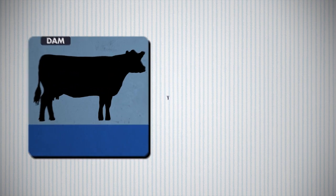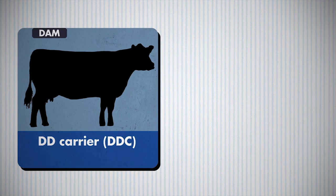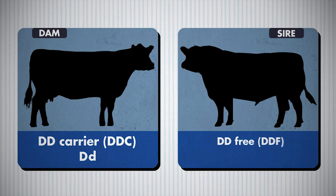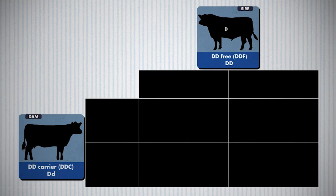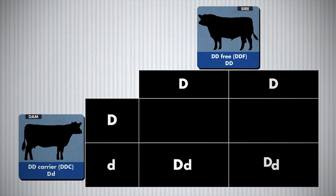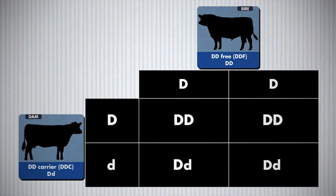In our first scenario, let's assume the cow is a DD carrier, designated with a capital D and the recessive small d. The sire, on the other hand, is DD-free and is designated with a capital D and a capital D. Place the sire's two capital D's at the top of the square and the dam's capital D and little d at the side. In this example, there is a probability of 50% that the progeny will be DD carriers, and 50% would be DD-free, possessing two copies of the dominant big D.